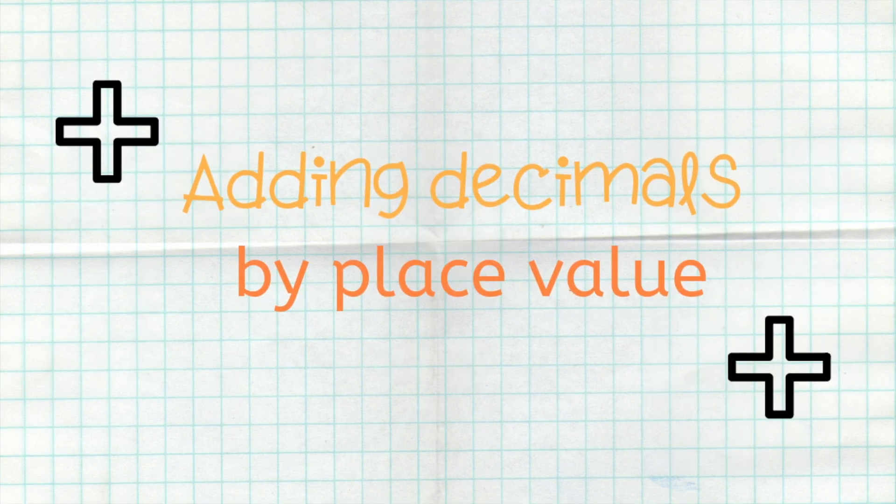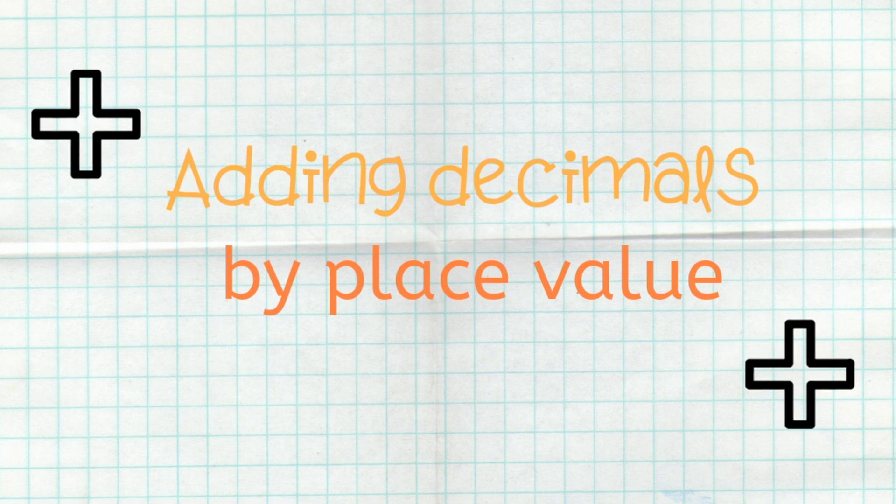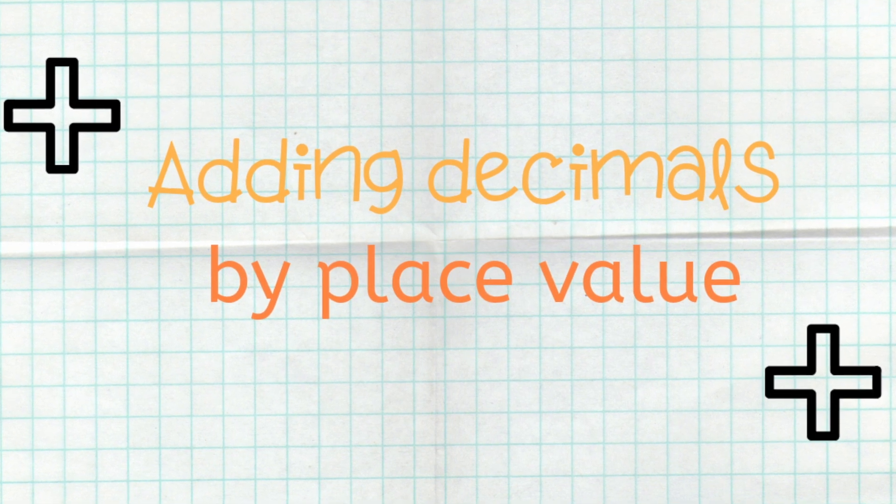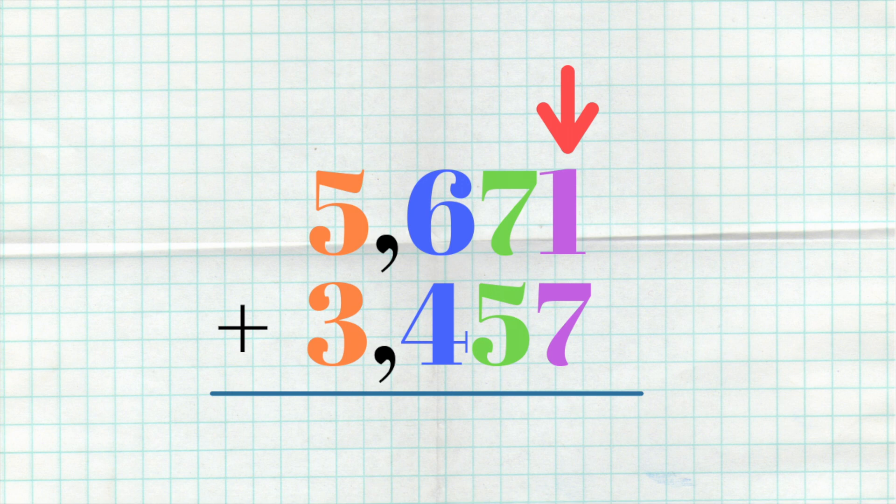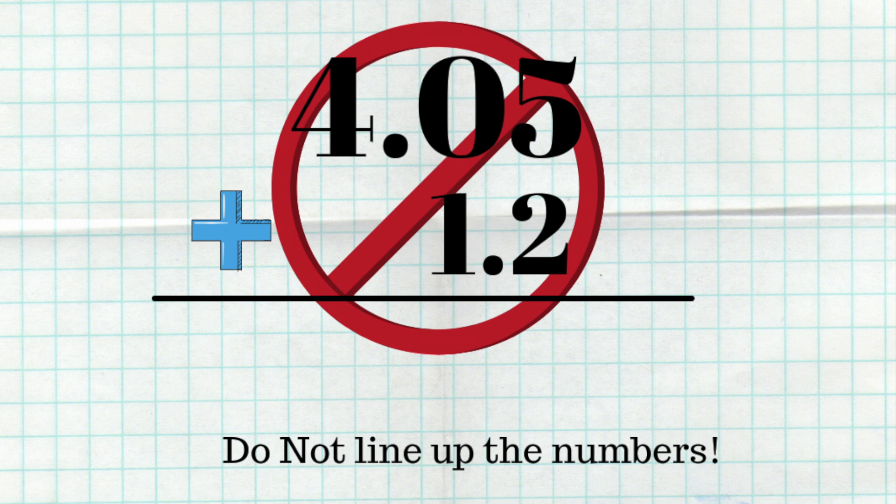So, now let's do the standard algorithm of adding up decimals using place value. When you're adding whole numbers, you always line up the digits and add starting in the ones place because that's the lowest place value. Well, when you're doing decimals, you're actually not going to line up your numbers anymore. You're going to line up the decimal.